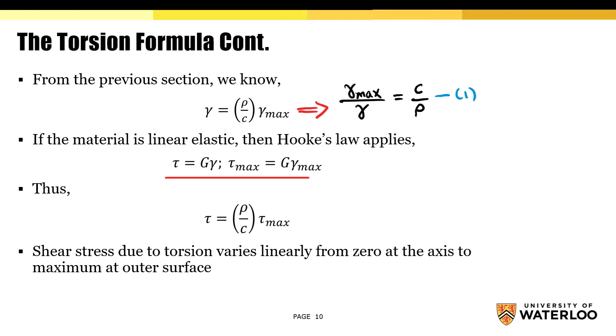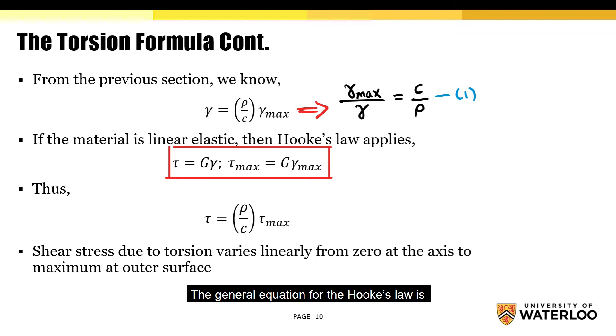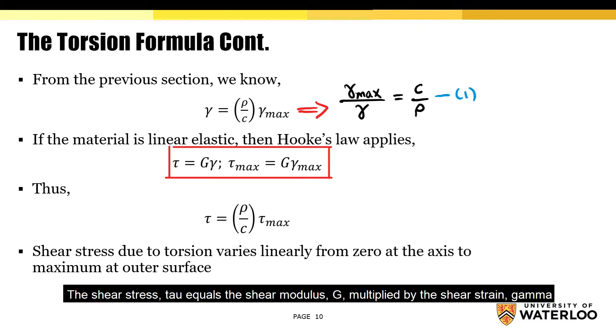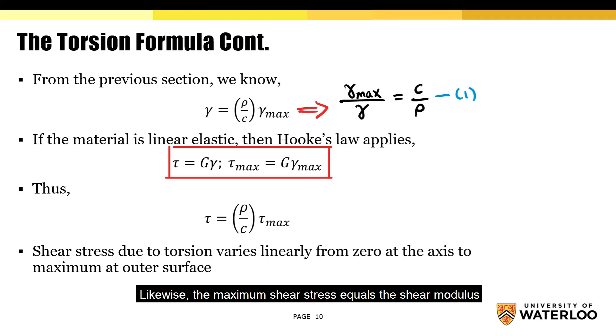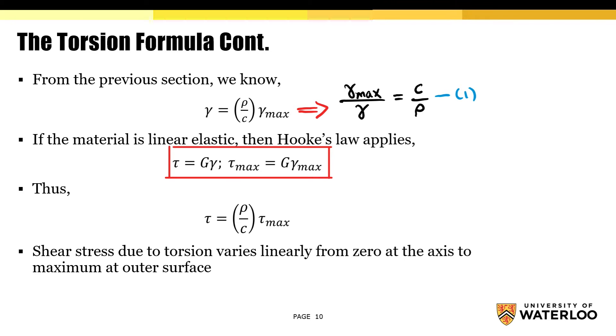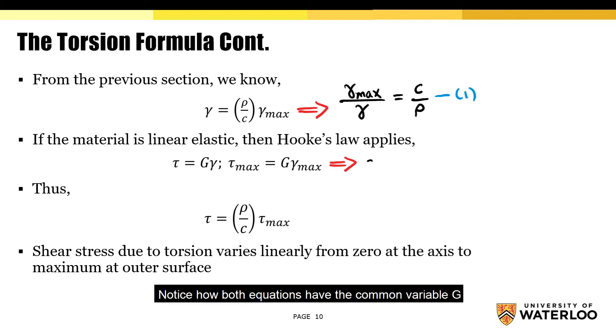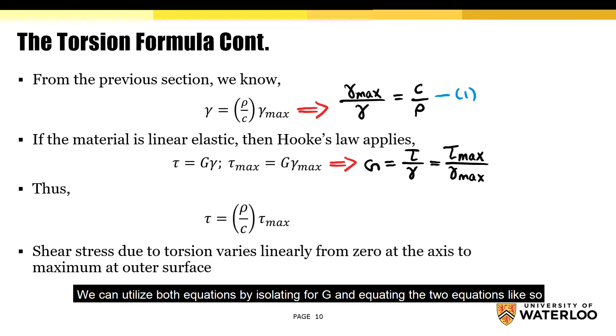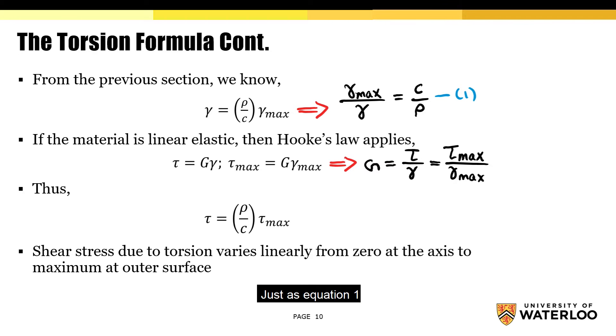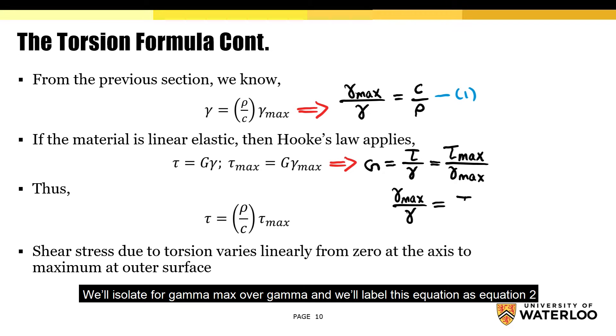Next we'll be using Hooke's Law. The general equation for Hooke's Law is the shear stress tau equals the shear modulus multiplied by the maximum shear strain. Notice how both equations have the common variable G. We can utilize both equations by isolating for G and equating the two equations like so. Just as equation 1, we'll isolate for gamma max over gamma and we'll label this equation as equation 2.